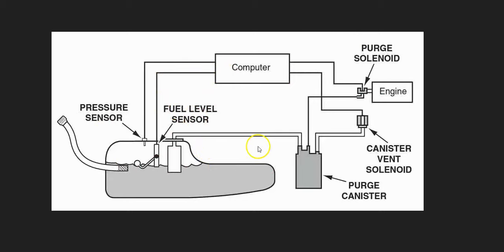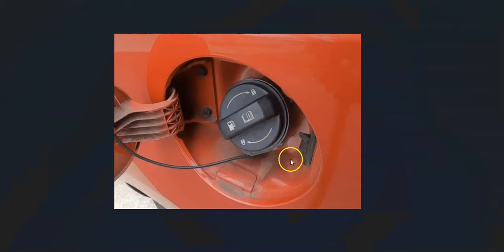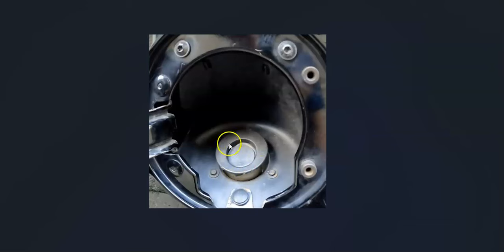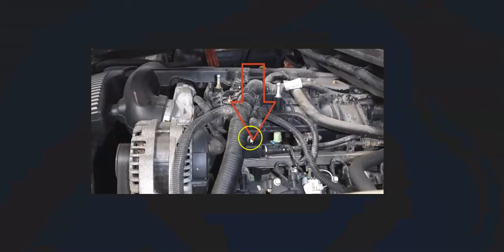One thing to keep in mind is that the whole system needs to be sealed — there can't be any leaks, or it will cause problems. This includes the gas cap and the filler neck. So the first thing to check is the gas cap — make sure it looks good, is not broken or damaged, and is closing all the way. This applies to Chevys with no gas cap too. If there are any leaks, the system won't work properly.